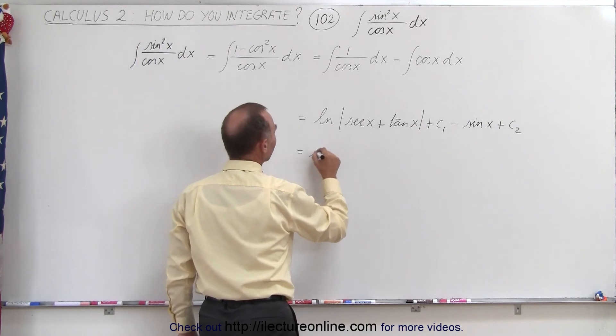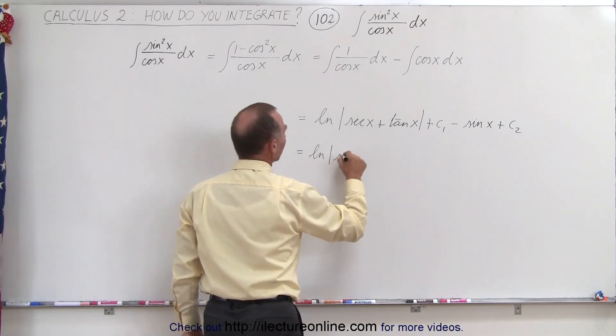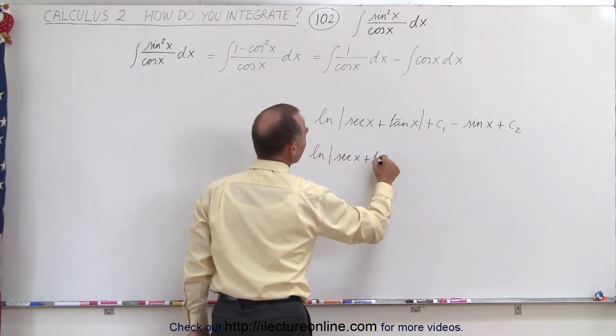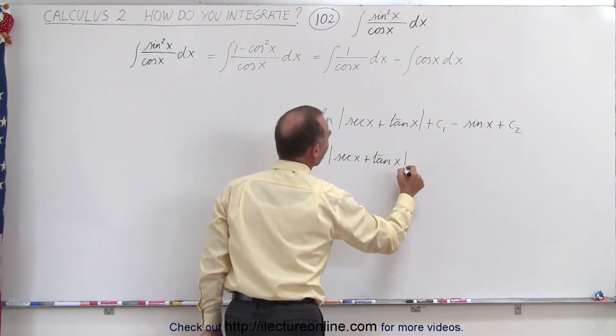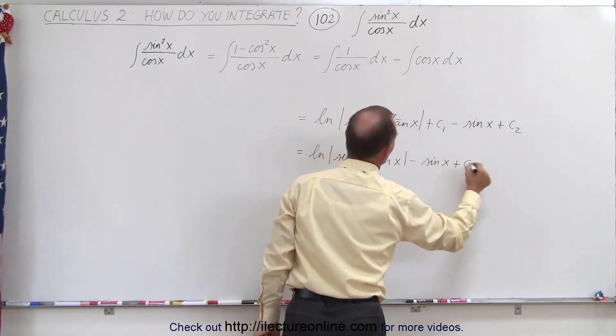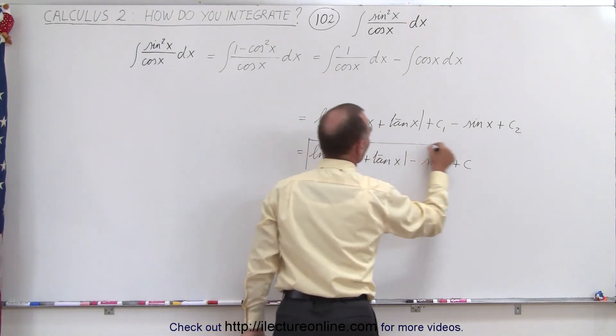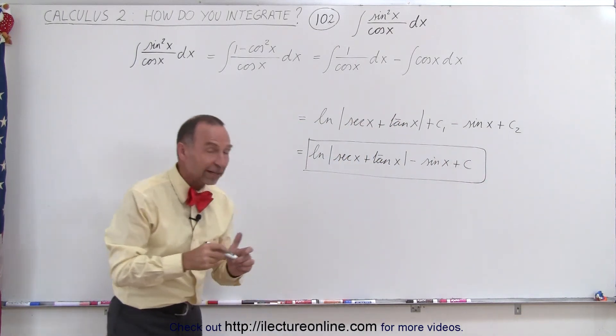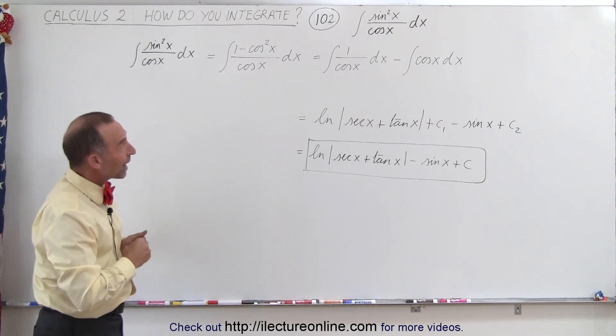Which means when we combine those, we get the natural log of the secant of x plus the tangent of x minus the sine of x plus a constant of integration. So now that we know how to integrate 1 over the cosine of x, this integral is not so bad. And that's how it's done.